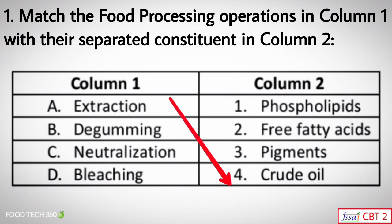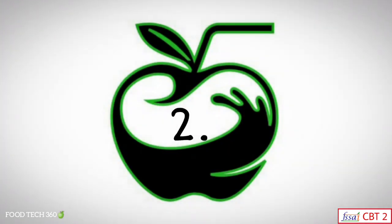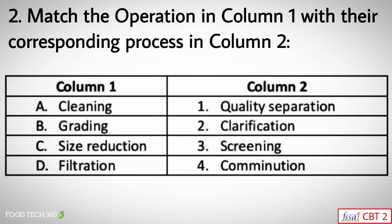Crude oil is separated during the extraction process. Phospholipids are separated during the de-gumming process. Free fatty acids are removed during the neutralization process. Pigments are separated during the bleaching process.